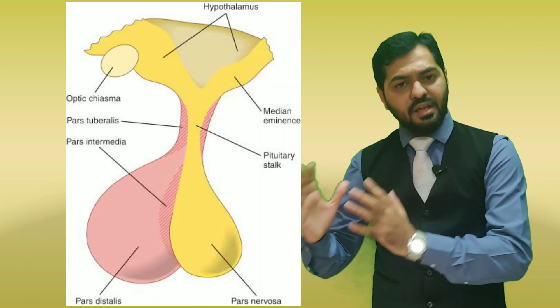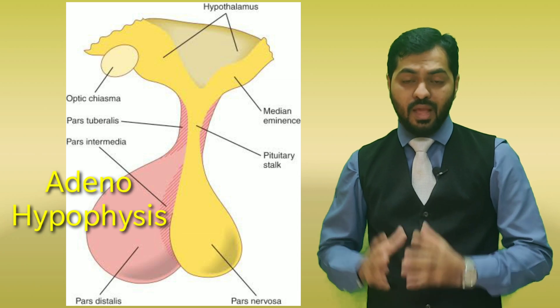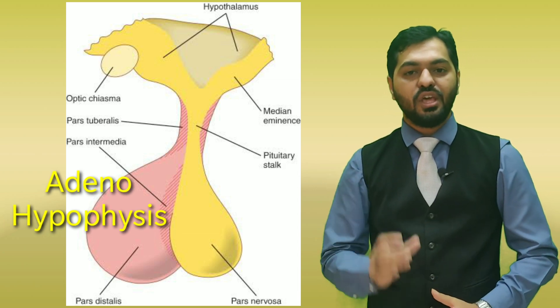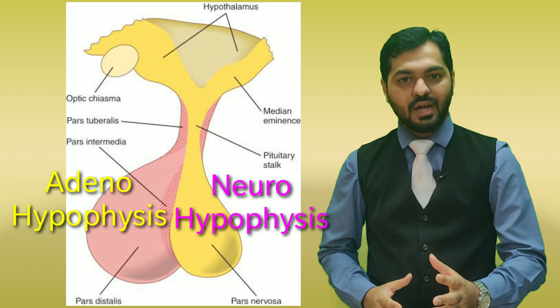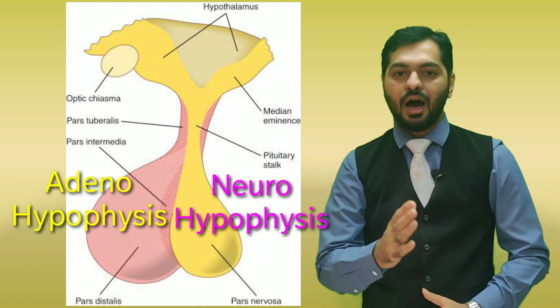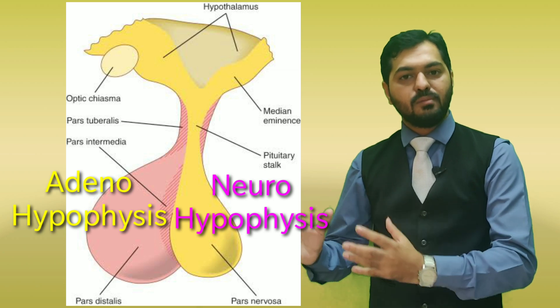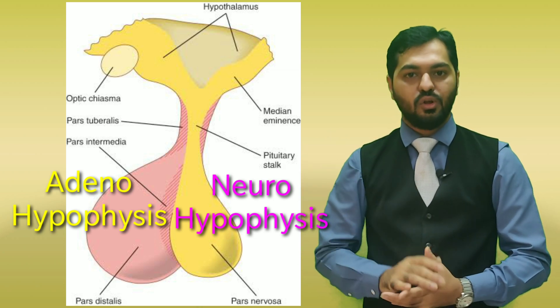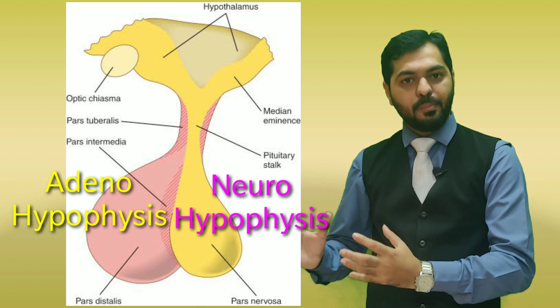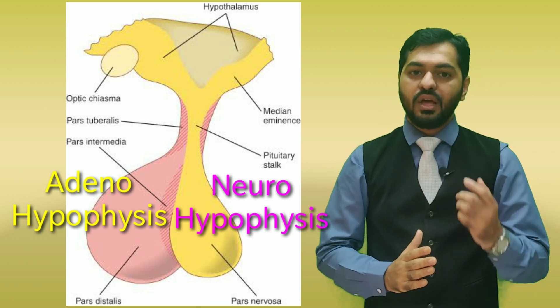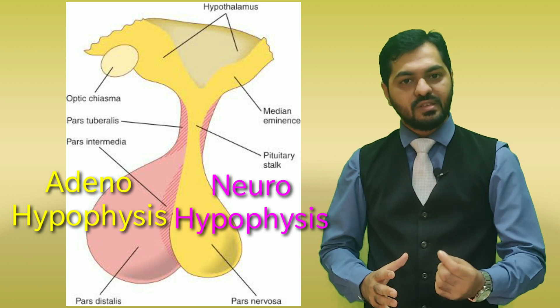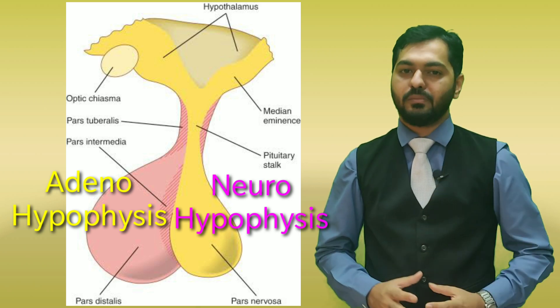Now let us discuss in detail about the structure of the pituitary gland. When you observe the structure, its anterior part is known as the adenohypophysis and its posterior part is known as the neurohypophysis. In both parts, the common suffix is hypophysis — the alternative name of the pituitary gland. The adeno word means glandular, so the anterior pituitary or adenohypophysis is the glandular part that secretes hormones, whereas the posterior pituitary or neurohypophysis basically receives certain neurons from the hypothalamus.